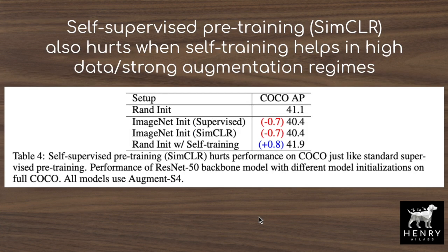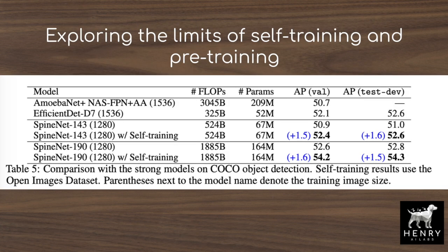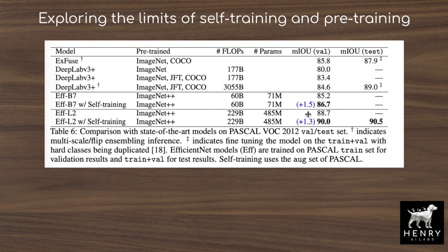Self-supervised pre-training with the SimCLR contrastive representation learning algorithm also hurts performance with higher augmentation — the S4 augmentation setting — in a similar way to supervised learning initialized weights. Only self-training continues to improve performance at higher levels of data augmentation. The authors further investigate gains from self-training using the Open Images dataset for the unlabeled counterpart alongside labeled COCO object detection and Pascal semantic segmentation data.